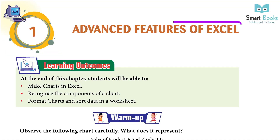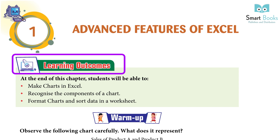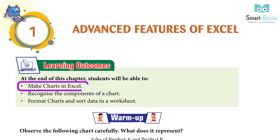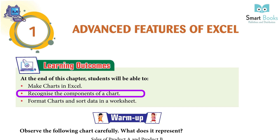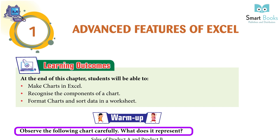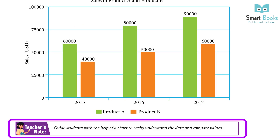Chapter 1: Advanced Features of Excel. Learning Outcomes: At the end of this chapter, students will be able to make charts in Excel, recognize the components of a chart, format charts, and sort data in a worksheet. Warm up: Observe the following chart carefully. What does it represent? Teachers guide students with the help of a chart to easily understand the data and compare values.